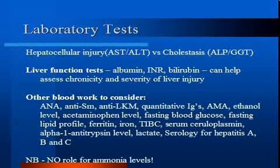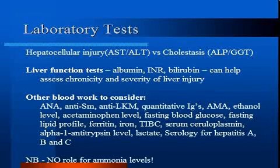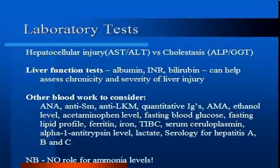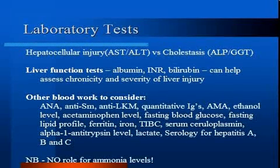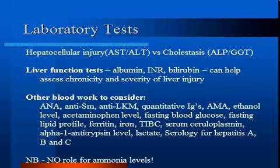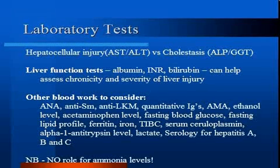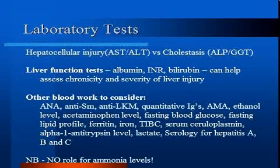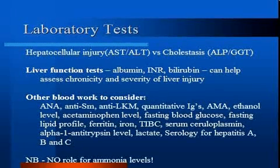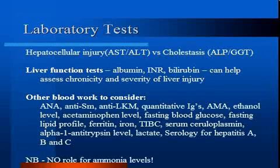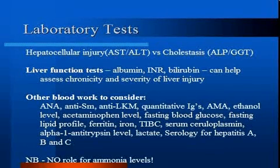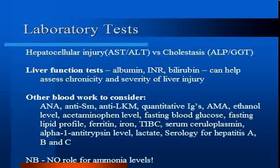Patients with a hepatocellular process generally have a disproportionate elevation in the serum aminotransferases compared with the alkaline phosphatase, while those with a cholestatic process have opposite findings. Serum albumin, bilirubin, and INR should be obtained to assess liver function. Other blood work to consider includes ANA, anti-smooth muscle antibody, anti-liver kidney microsomal antibody, and quantitative immunoglobulins to assess for autoimmune hepatitis. AMA is elevated in over 95% of patients with primary biliary cirrhosis. Fasting blood glucose and lipid profile should be done to assess if fatty liver could be contributing. Ferritin, iron, and TIBC may suggest a patient is iron overloaded. Serum ceruloplasmin screens for Wilson's, and alpha-1 antitrypsin levels may be low in the deficiency state. Lactate may be elevated after an ischemic insult. Serology for hepatitis viruses will help screen for the viral causes.